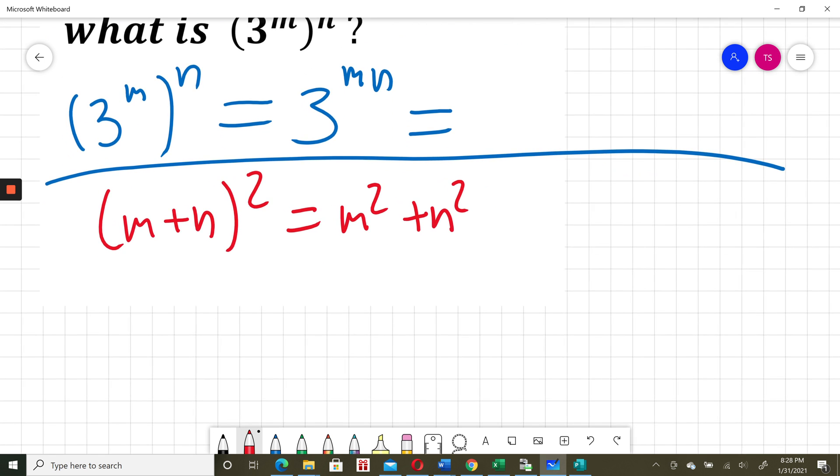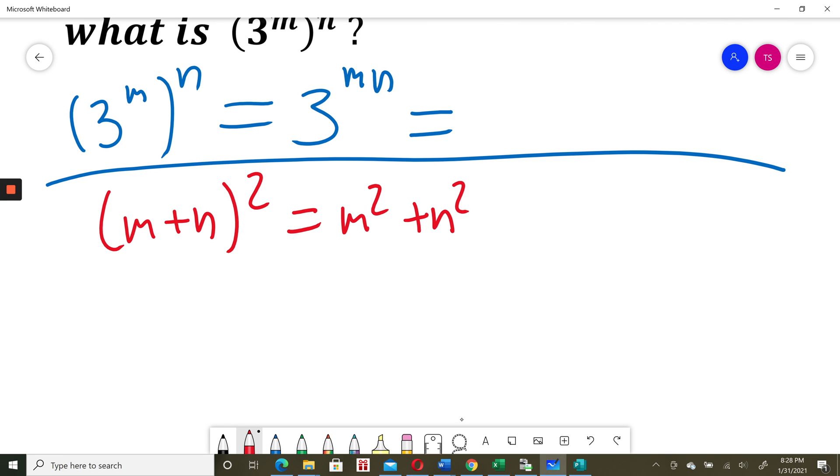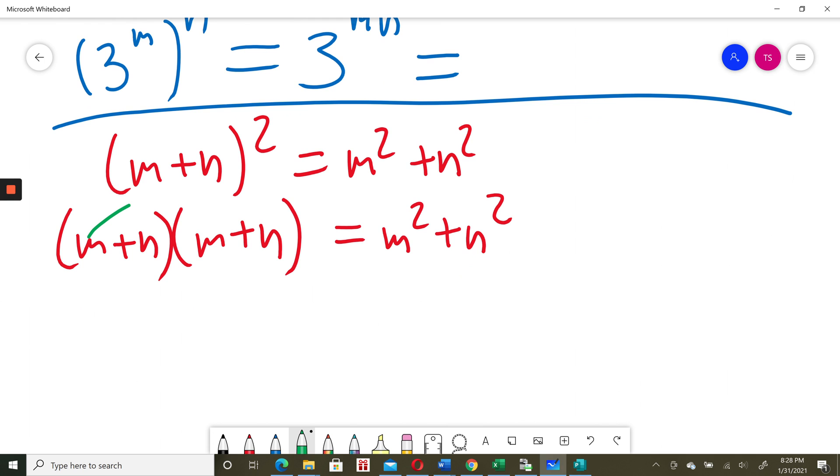On the left side, I have (m+n)², which equals (m+n)(m+n), and that equals m² + n². When I multiply the brackets using the FOIL method, I get m² + 2mn + n².